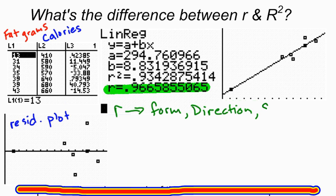And it also gives us form, direction, and strength. The closer we are to one, positive one, or negative one, the stronger the linear relationship, or the stronger the linear association. So this one's pretty strong. 0.9665, that's a pretty strong, positive, linear relationship, or linear association between these two variables, fat grams and calories.